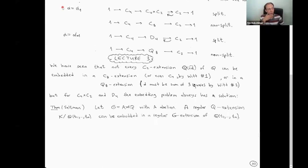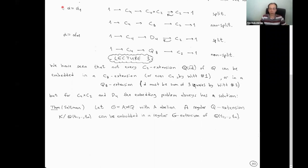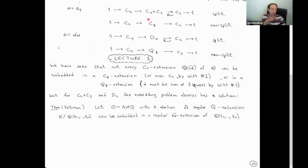This problem of whether extensions split or not turns out to be closely related to what we've been talking about, which is an embedding problem. Namely, when you try to embed an extension with Galois group Q — think of Q being C2 — into a larger Galois extension which has a bigger Galois group. When you have one Galois extension contained in another, that means one smaller group is a quotient of the bigger group. And we've seen that sometimes this is possible, sometimes it is not.